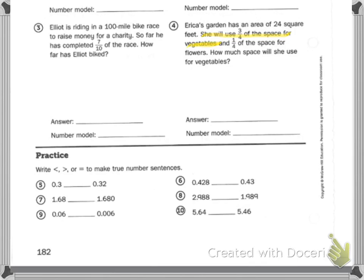Your practice says write greater than, less than, or equal to to make the number sentences true. And I read that backwards: write less than, greater than, or equal to to make the number sentences true.